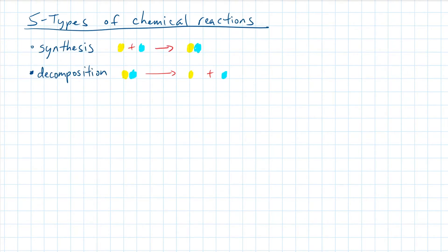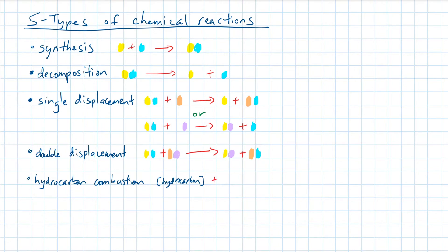Today, we'll talk about five different ways chemical reactions can occur: synthesis, decomposition, single displacement, double displacement, and hydrocarbon combustion.